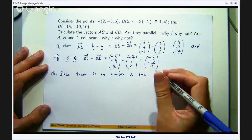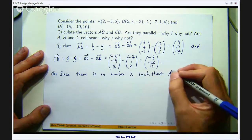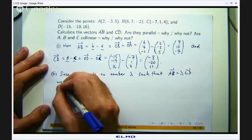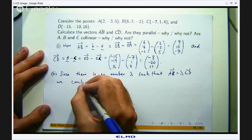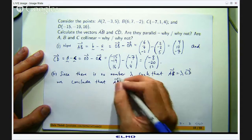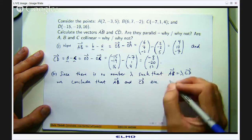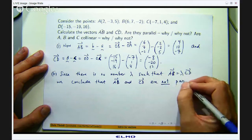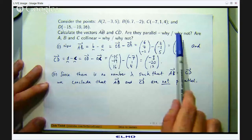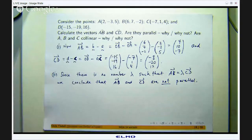So since there is no scalar lambda such that vector AB equals lambda times vector CD, we conclude that the vector AB and the vector CD are not parallel. Let us move on to the last part of this example: are the points A, B and C collinear, and why or why not?